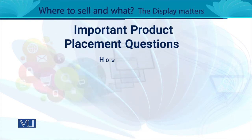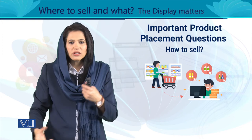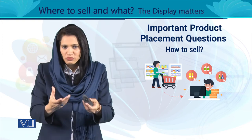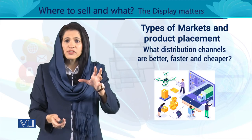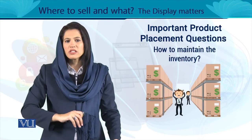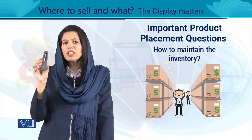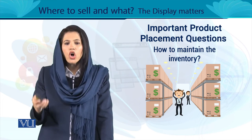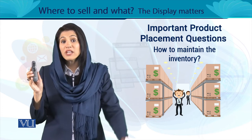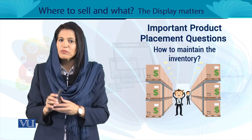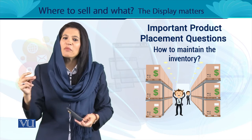फिर उसके बाद how to sell - बेचना किस तरह से है। कौन से distribution channel आपको ज़्यादा सस्ता पड़ेगा। खास तौर पर आपने inventory कैसे maintain करनी है - मिसाल के तौर पर आप एक नए entrepreneur हैं, आपने बहुत अच्छा pointer बनाया, और एक market में जाके एक दुकान पर रख दिया। अगर customers आएं और कहें कि हमें pointers चाहिएं और आपके पास available नहीं हैं - और अगर order place करें तो एक महीने बाद मिलेगा - is it possible? In the meanwhile कोई competitor आएगा और वो order आपसे ले उड़ेगा।